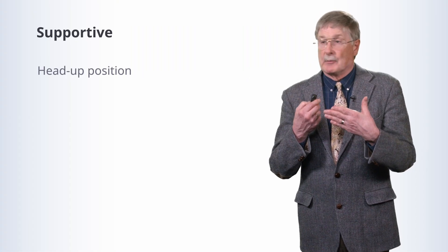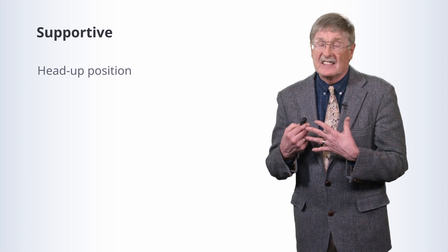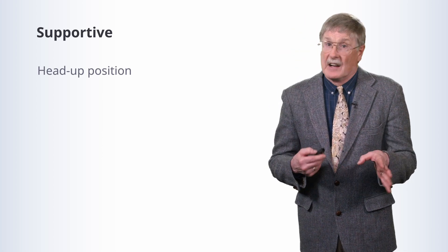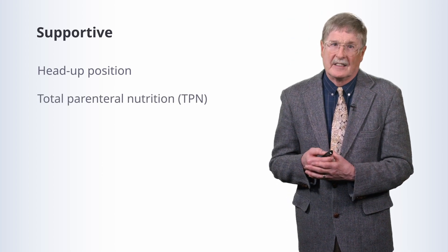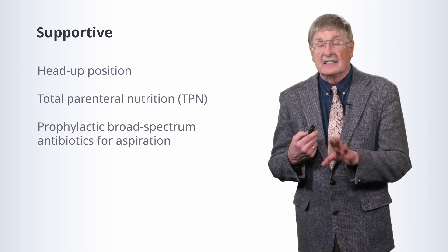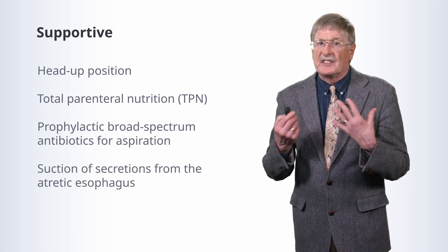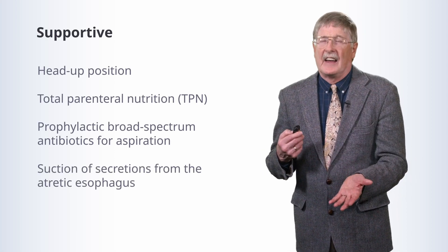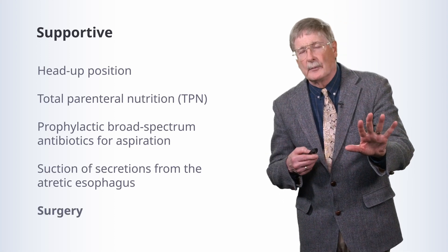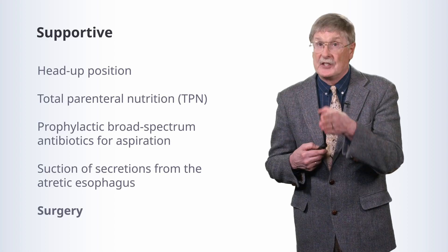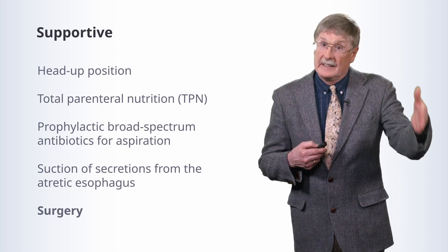What do we do about this? We need to recognize it quickly. When we do, we want to keep the baby in the head-up position — we don't want to regurgitate gastric contents through a tracheoesophageal fistula into the lungs, which would cause a very nasty chemical pneumonitis. We'll put them on total parenteral nutrition to provide nutrition. We give broad-spectrum antibiotics to protect against the possibility that they've aspirated. We completely suction everything that falls into the esophagus to keep it from regurgitating. And then we call our surgeons, who need to reestablish normal flow across the atretic portion of the esophagus and cut the connection between the esophagus and the trachea.